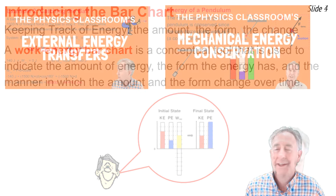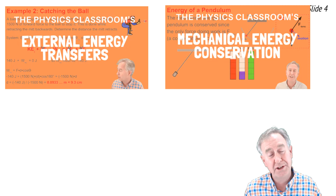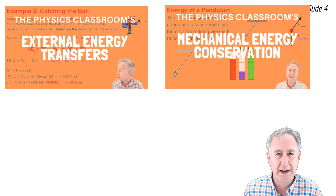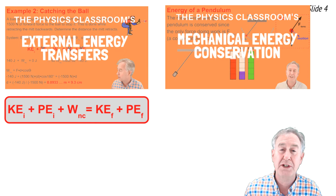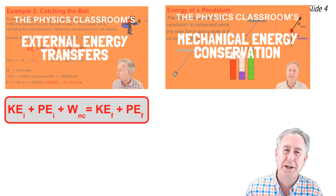Here are two previous videos in this tutorial series recommended for viewing prior to this video — links are in the description. In the video on External Energy Transfers, we discussed a unique situation in which work was done by non-conservative forces to change the total amount of mechanical energy of the system. In such cases, there's a W-NC term — work done by forces other than gravity and spring — and the initial amount of mechanical energy is not equal to the final amount. The work term makes up the difference.